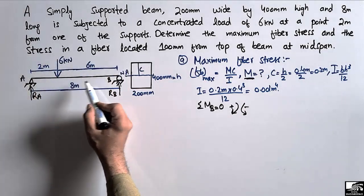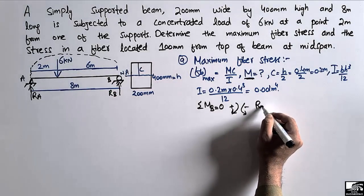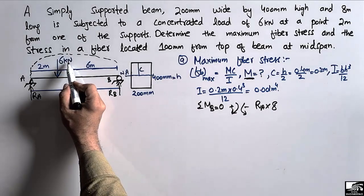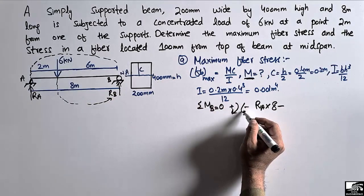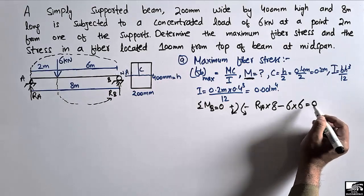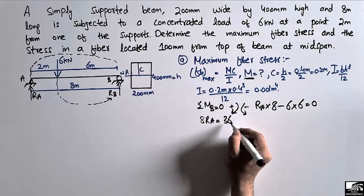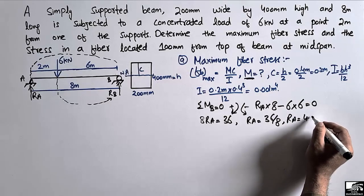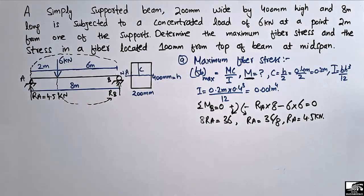R_A creates a clockwise moment about point B, so it is positive: R_A multiplied by 8 meter. The 6 kilonewton load creates a counterclockwise moment about B, so it is negative: minus 6 multiplied by 6 meter. Setting the sum equal to zero, 8·R_A equals 36, giving R_A equal to 4.5 kilonewton.